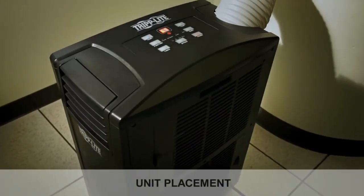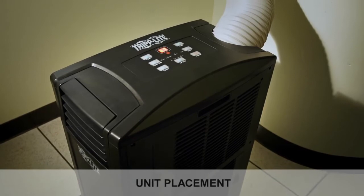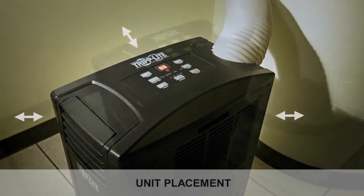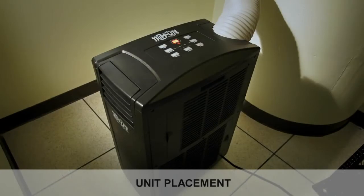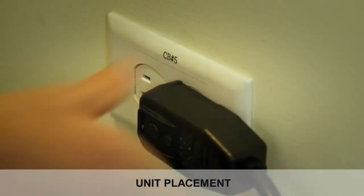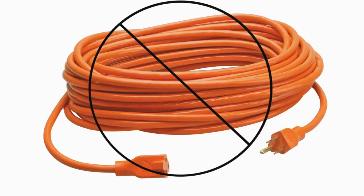Prior to installation, ensure that the unit will be located in a level space with at least 20 inches clearance on all sides for proper airflow. The unit should be installed in a location close enough to an AC power outlet to allow you to plug the unit in without straining its cord. Do not use an extension cord to connect the unit to AC power.